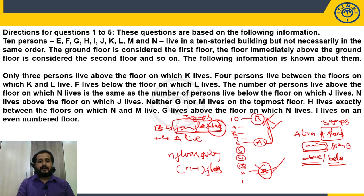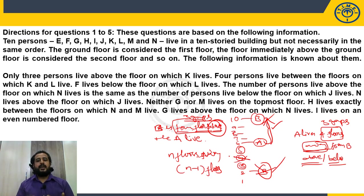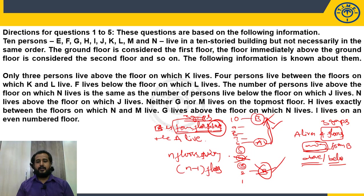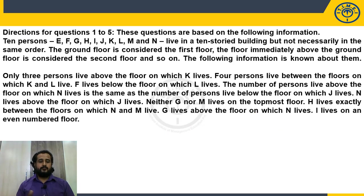Sometimes clues mention even or odd floors. For example, 'A does not live on an even-numbered floor' means A lives on an odd-numbered floor. Similarly, 'B does not live on an odd-numbered floor' means B lives on an even-numbered floor. These are all the technical terms you may encounter in floor arrangement questions, so please be careful with them.